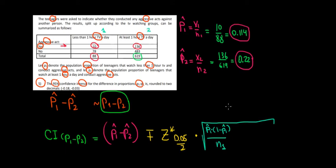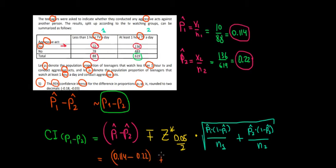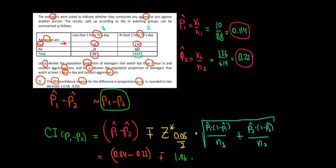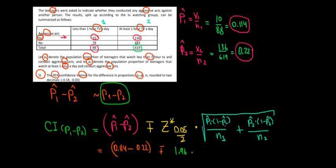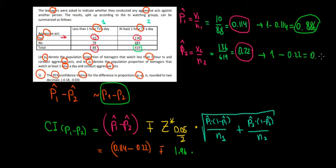The first sample is the people who watch less than an hour per day, and the second sample is those who watch at least one hour. Plus p̂₂ times (1 − p̂₂) divided by n₂, the number of observations in the second sample. All the data is accessible. We also need the complement proportions: 1 minus p̂₁ = 1 − 0.114 = 0.886, and 1 minus p̂₂ = 1 − 0.22 = 0.78.